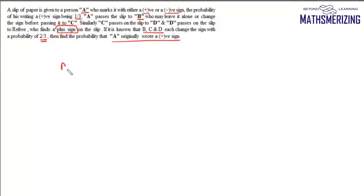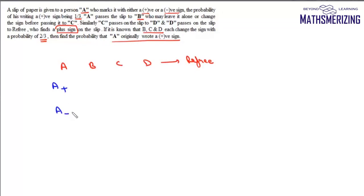The slip of paper starts from A, goes to B, then to C, then to D, and thereafter to the referee. A can either make a plus sign — event A positive — or start with a negative sign — event A negative. We will first find the probability that when the referee receives the slip it shows a positive sign, which is event E plus. This will depend on whether A starts with plus or minus.